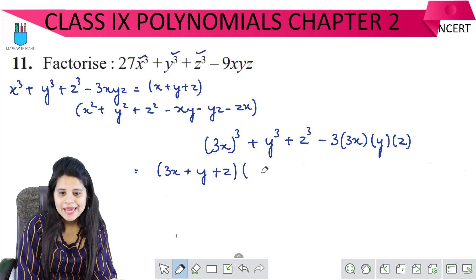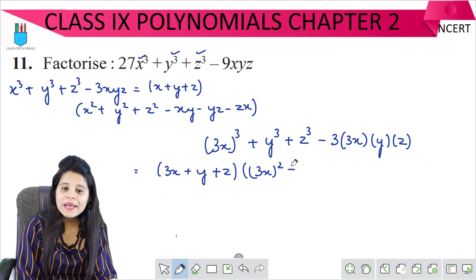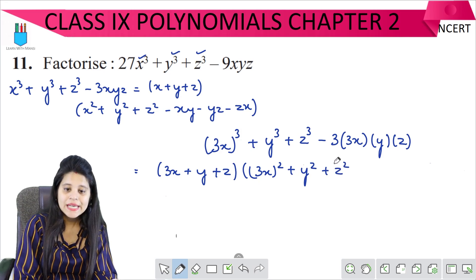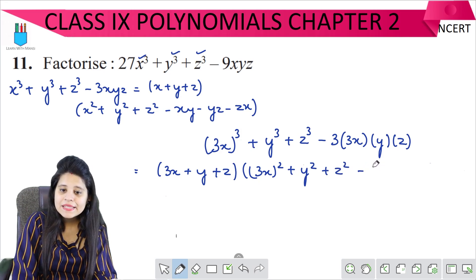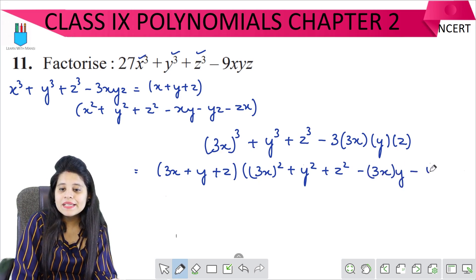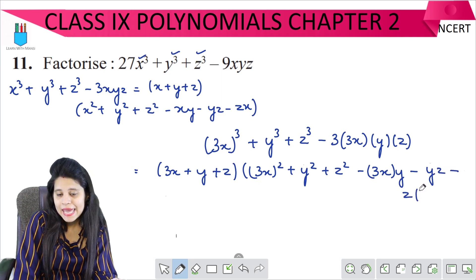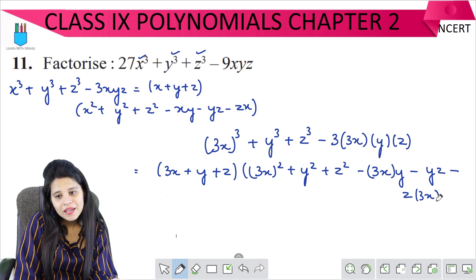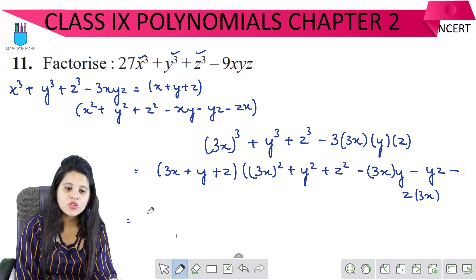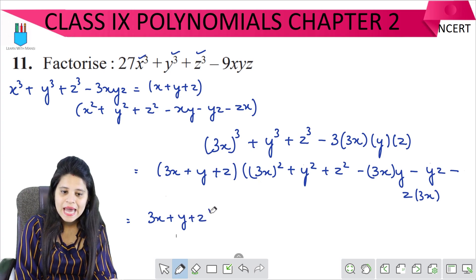Bracket. Bracket. X square, it means 3x square. Plus y square. Plus z square. Minus xy. What is x? 3x and with y. Then minus yz. And minus zx. Where x will come, there is 3x. So I can write this. Now this is 3x plus y plus z as it is. This will be changed.